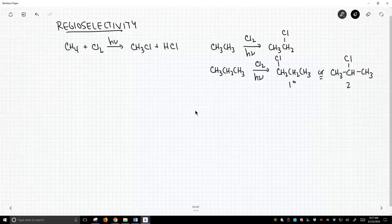So here's the primary halide, or we can get the secondary halide. As it turns out, if you perform this reaction, the major product is the secondary halide.